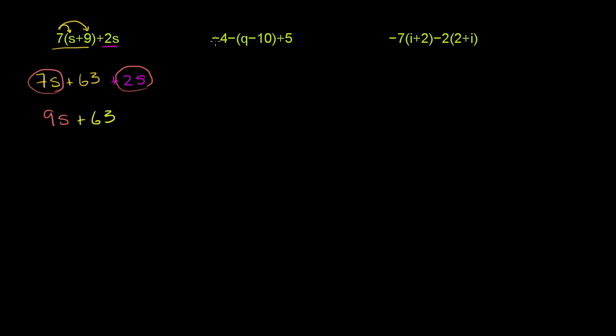Let's do this one over here. Negative 4 minus the quantity q minus 10, plus 5. So what I'm going to do here to get rid of these parentheses is distribute the negative sign. This is essentially multiplying both of these terms times negative 1. You could view that there's a negative 1 out here.